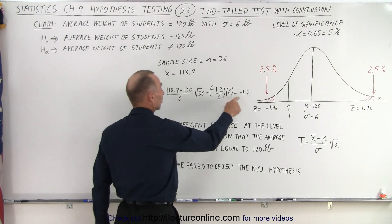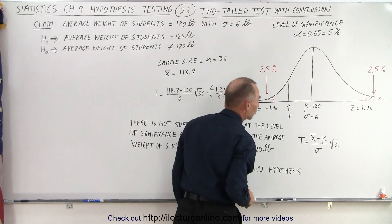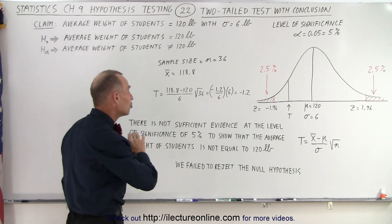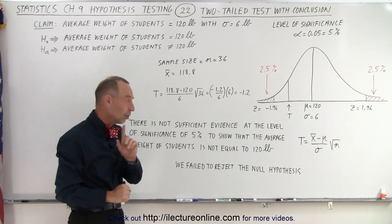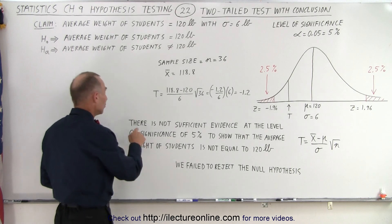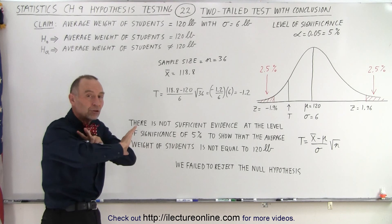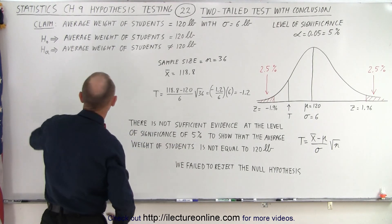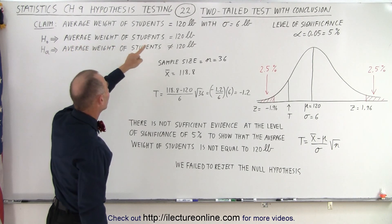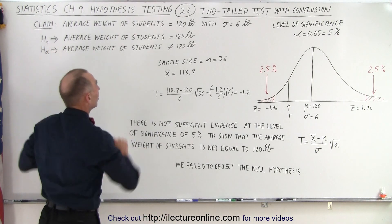Notice that when we have t equals negative 1.2, that places it into the non-critical region rather than the critical region. So we did not fall into the critical region, and therefore we failed to reject the null hypothesis. We failed to reject the statement that the average weight of students is 120 pounds. Since we failed to reject it, we have to accept the null hypothesis.